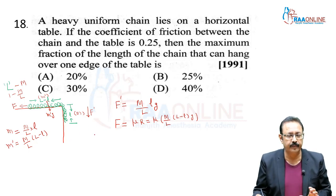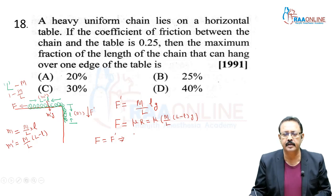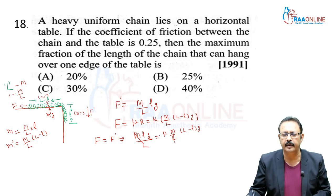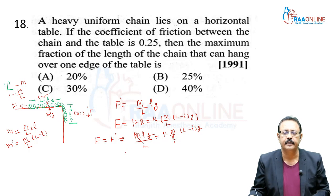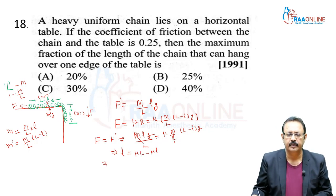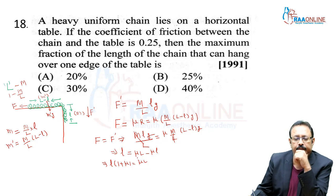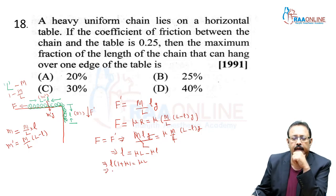For the stationary situation, the driving force equals the frictional force: (M/L)·l·g = μ·(M/L)·(L − l)·g. Cancel M/L and g. We get l = μ(L − l), so l(1 + μ) = μL. With μ = 0.25, l · 1.25 = 0.25L.